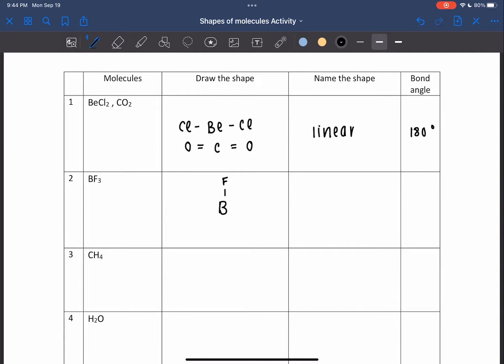For three bond pairs, it is called trigonal planar, which has a bond angle of 120 degrees. An example for this is BF3.